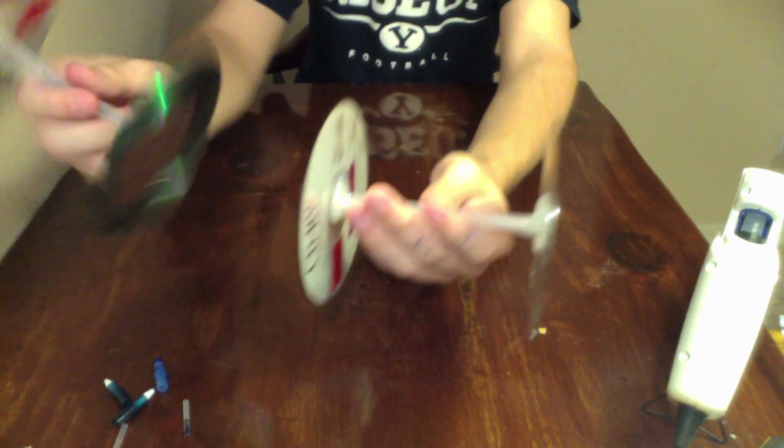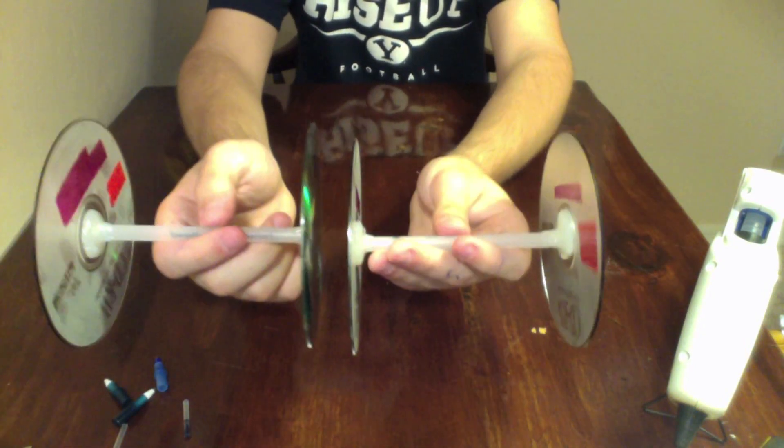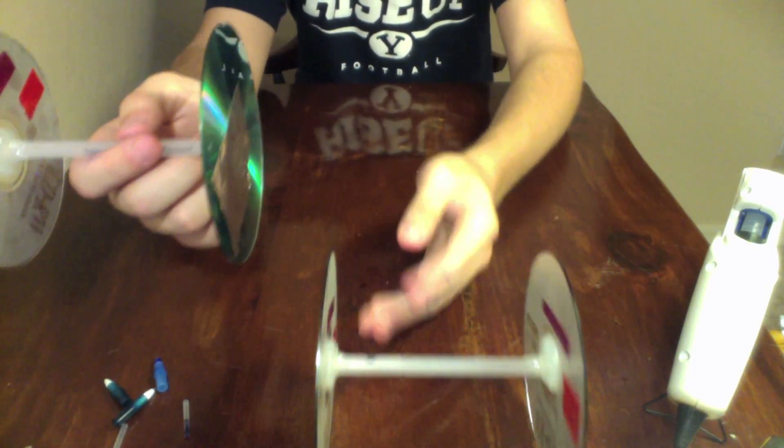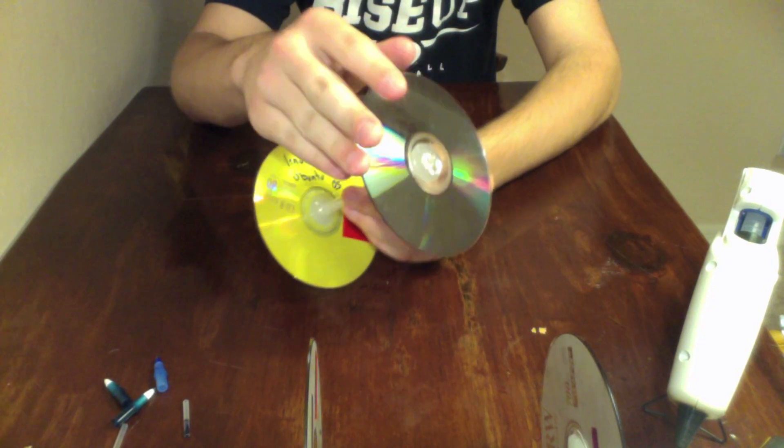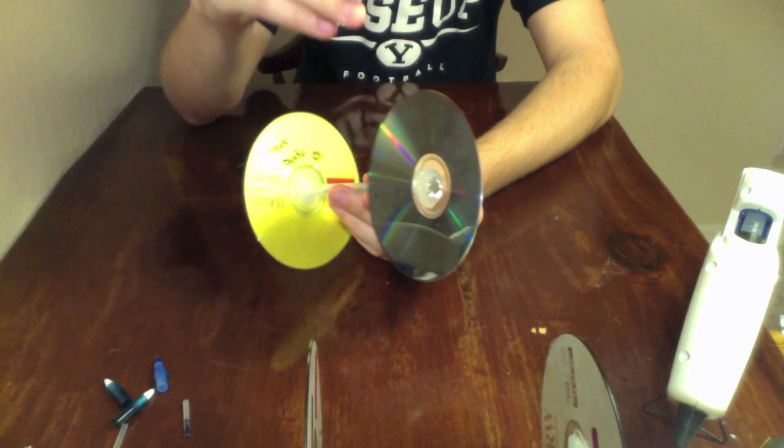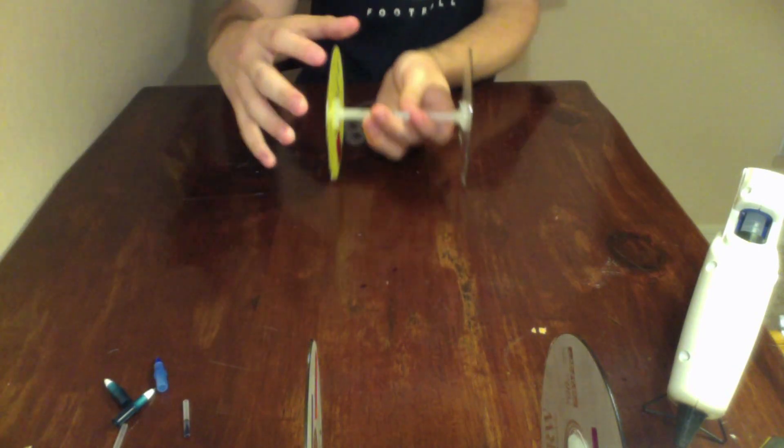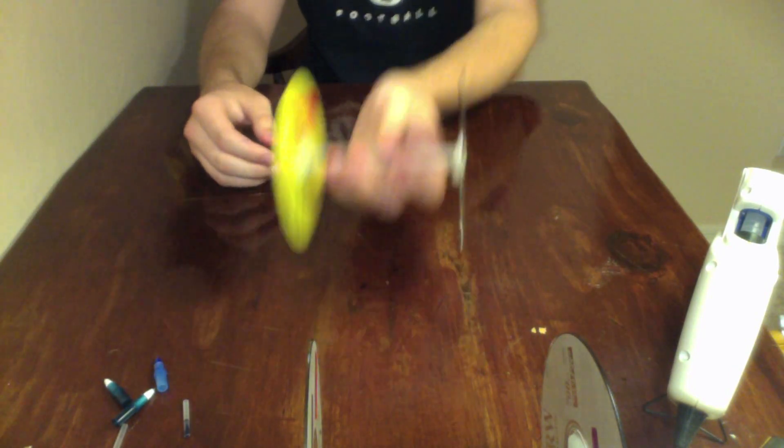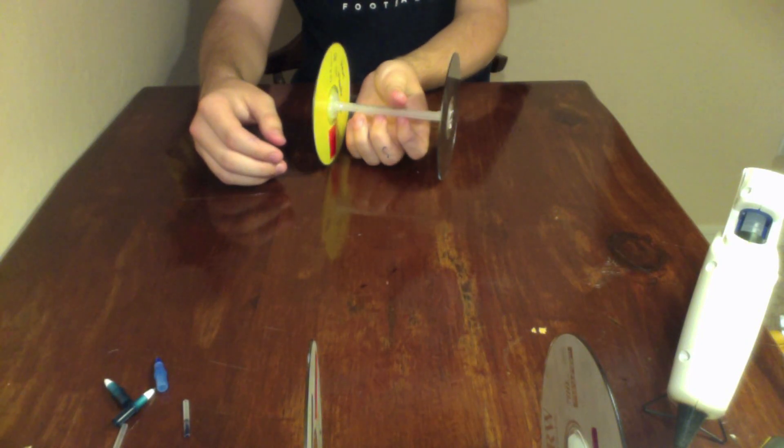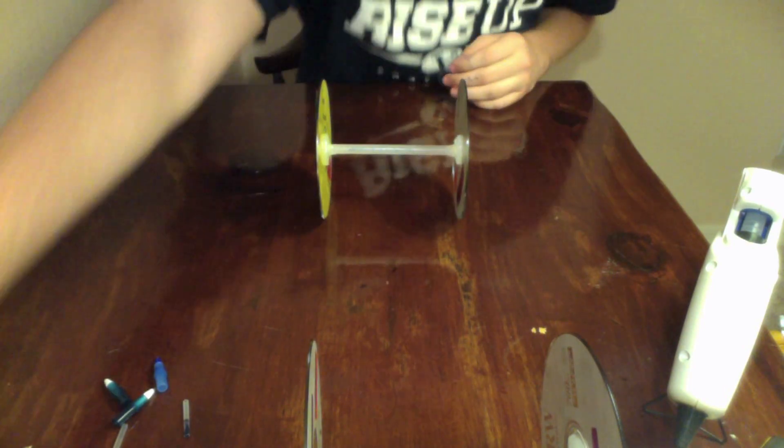Now what you want to do is pick one of your sets of wheels to be your driver axle. What that means is this is going to be the wheel that you want traction on, so when the mousetrap starts pushing your car, it'll be able to get traction on the ground and use all of its energy to move forward instead of spinning out in place. So, I'll just pick this one to be my back axle.